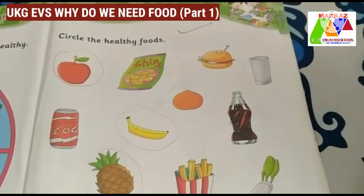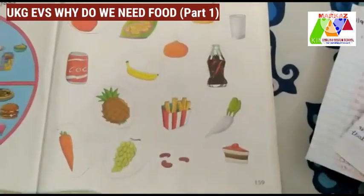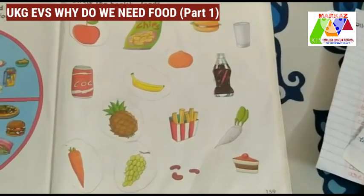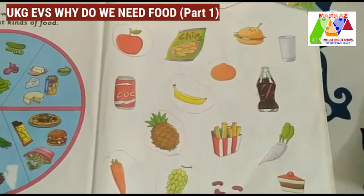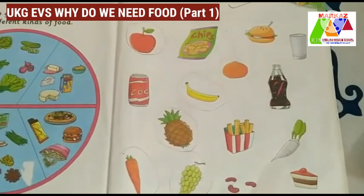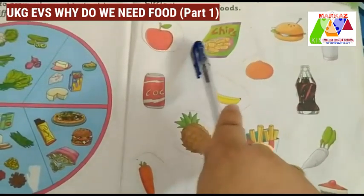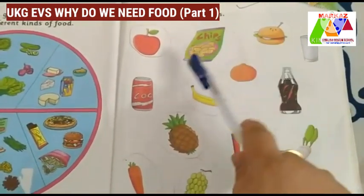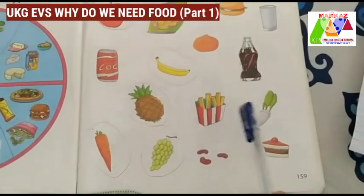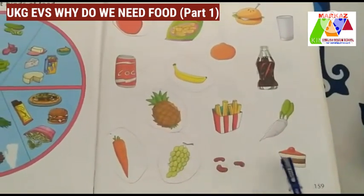Now go to page number 159 — Eat Healthy. Here we can see some junk food items and healthy food items. Children, you should circle only the healthy foods. The items listed are: apple, chips, burger, colas, banana, orange, pineapple, french fries, radish, carrot, grapes, rajma and cakes.